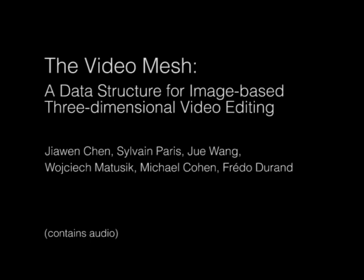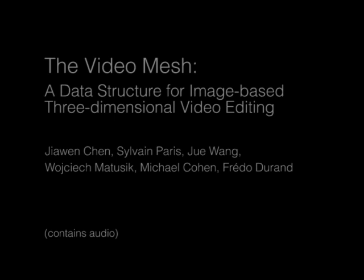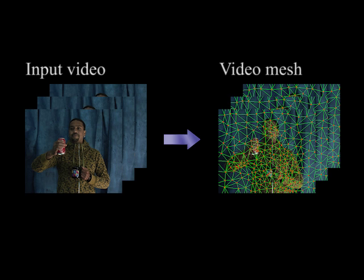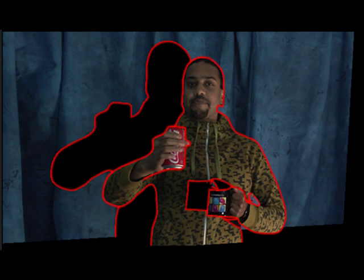We present the video mesh, a new data structure for video editing. The video mesh encodes the motion, layering, and 3D structure of a video sequence in a unified data structure. Intuitively, it looks like a paper cutout of the world.